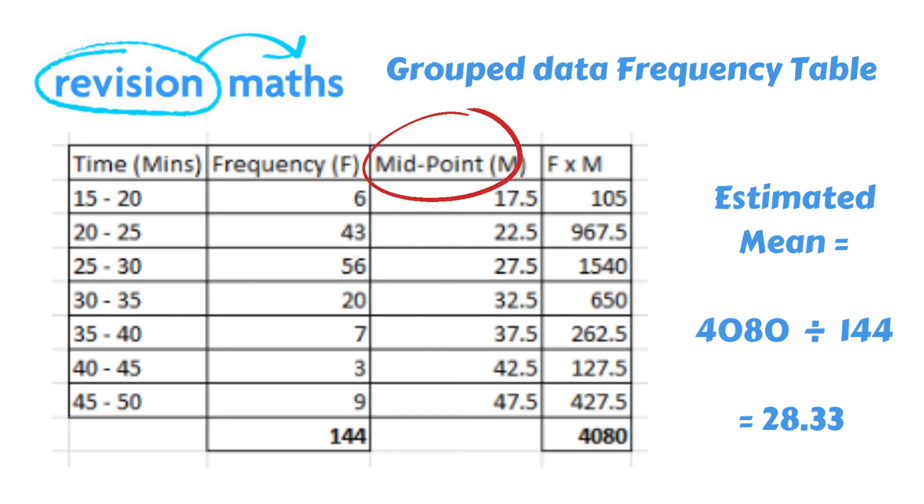This is only an estimated mean as it uses the midpoint for each group and not the actual value of the times for each runner.